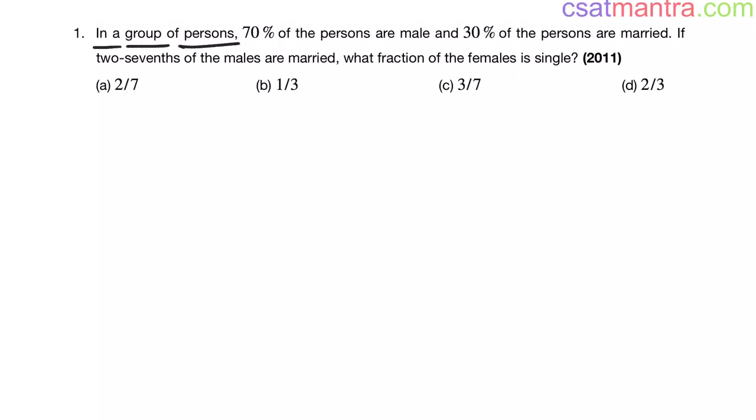In a group of persons, 70% of the persons are male and 30% of the persons are married. If two-sevenths of the males are married, what fraction of the females is single? This question is from the percentages chapter and was asked in 2011.